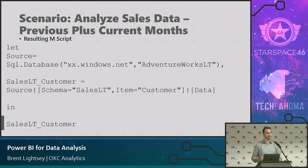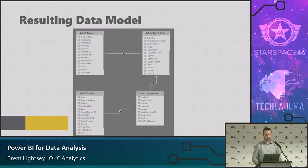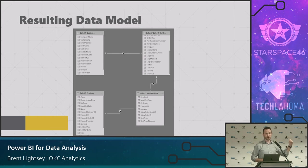Using this, I can pull in four tables that load a model out of AdventureWorks: Customers, Products, Sales Order Header, and Sales Order Detail. You start to see why it's called a tabular model — it's just four tables with relationships between them.